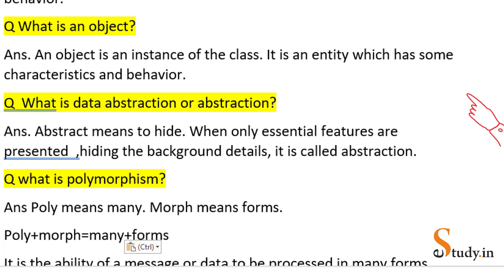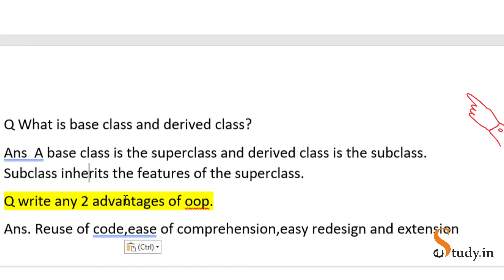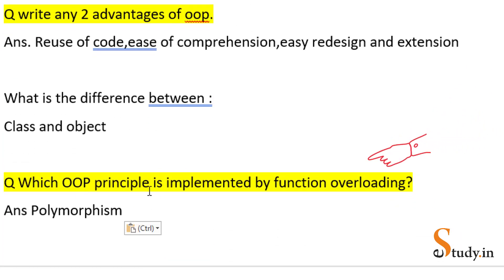For example, a question can come 'What is the difference between a class and an object?' Or a question like this can also come: 'Which OOP principle is implemented by function overloading?' Here we've done function overloading, so the answer would be polymorphism because in function overloading we have many forms of one function.